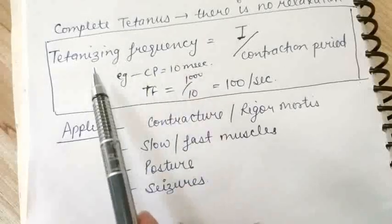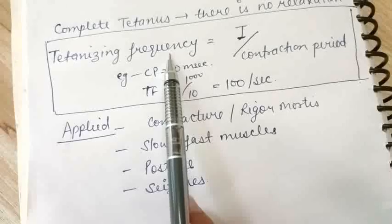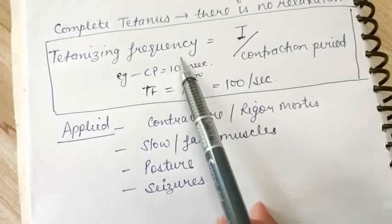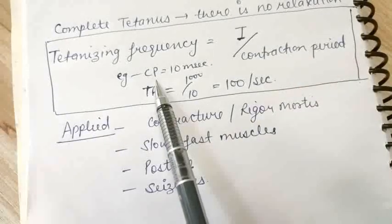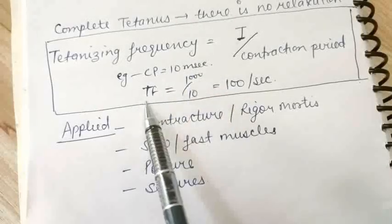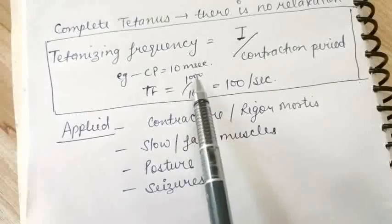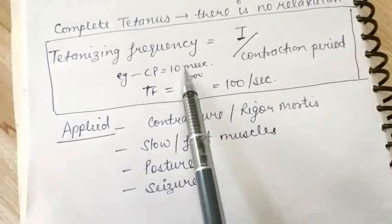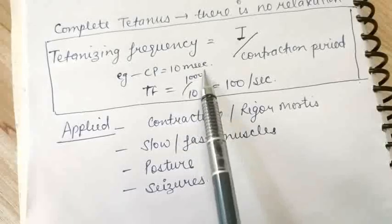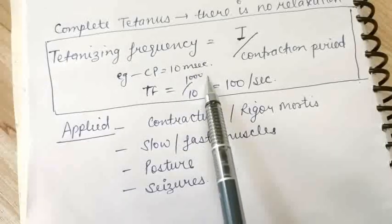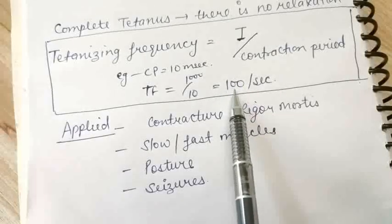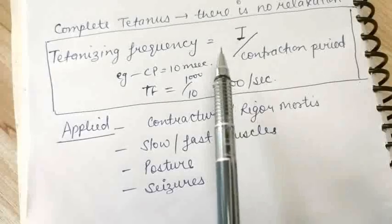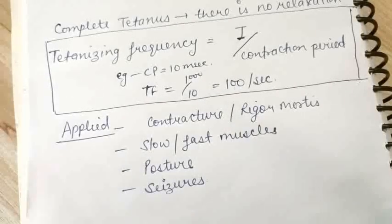You can also calculate tetanizing frequency — that is, at which frequency a muscle will undergo tetanus. There is a formula: tetanizing frequency equals one divided by the contraction period. For example, if the contraction period of a muscle from a simple muscle twitch recording is 10 milliseconds, tetanizing frequency is 1000 milliseconds divided by 10 milliseconds, giving 100 per second. At 100 stimulations per second, that muscle will surely undergo tetanus.